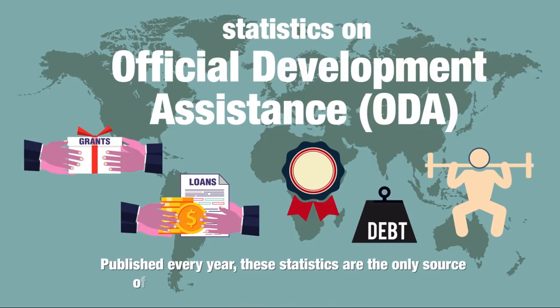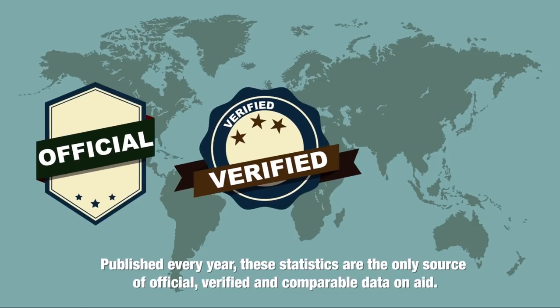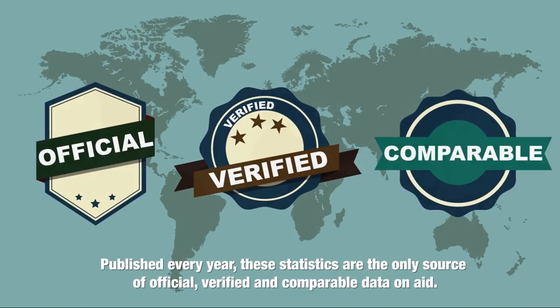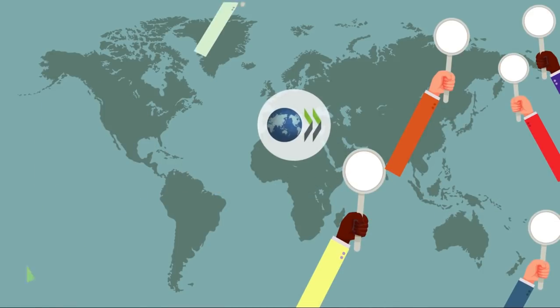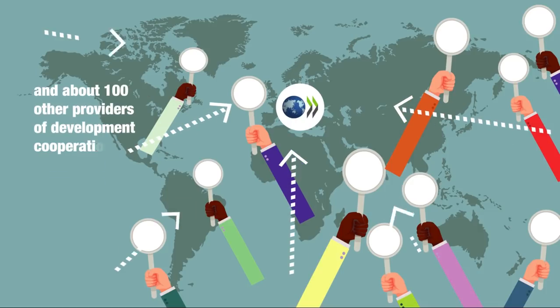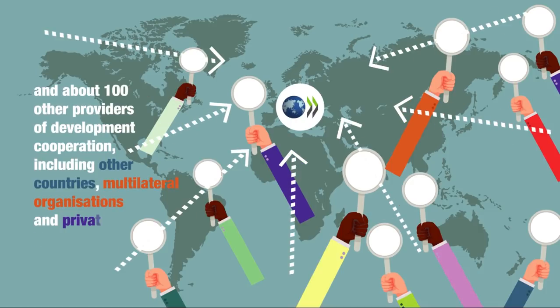Published every year, these statistics are the only source of official, verified and comparable data on aid. They are reported by 30 members of the OECD Development Assistance Committee, or the DAC, and about a hundred other providers of development cooperation including other countries, multilateral organizations and private foundations.